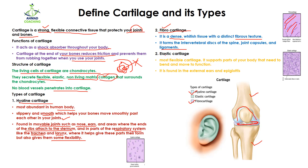The third type is elastic cartilage. As the name indicates, it is elastic in nature — it is the most flexible type and supports parts of the body that need to bend and move. It is found in the external ears and in the epiglottis. You can see that the external ear is made up of elastic cartilage because it is flexible and you can easily move it.